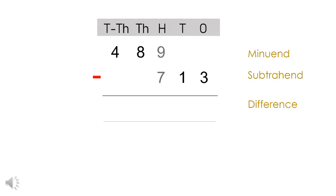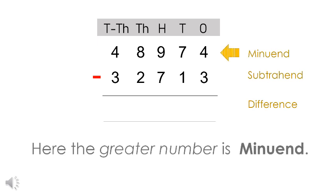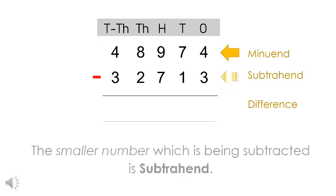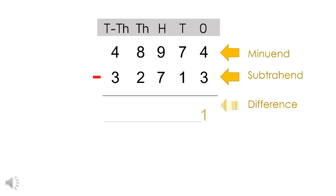Let us understand the terminology with the help of an example. If we take away 32,713 from 48,974, the larger number from which we subtract is called the minuend, and the number which is subtracted is called the subtrahend. The result of subtraction is called the difference between the given numbers.